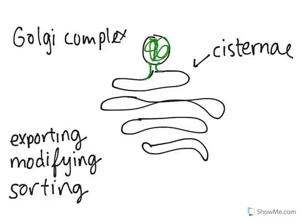You can think of the Golgi complex as kind of the UPS office. It takes in all of these packages being made by the cell and then decides where to ship them and how to sort them.